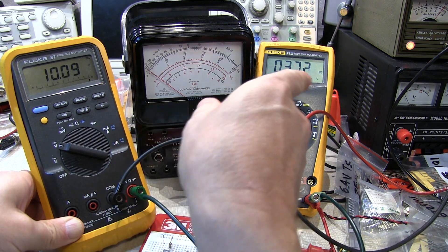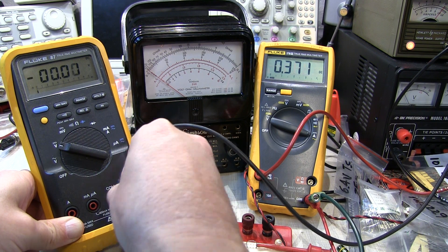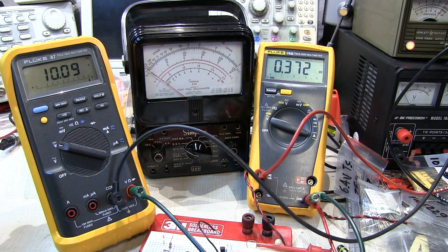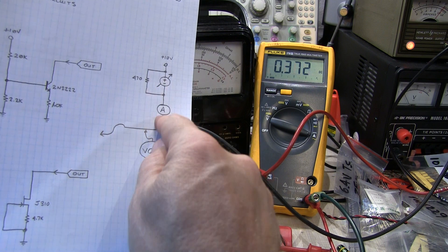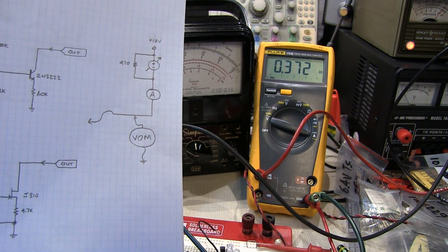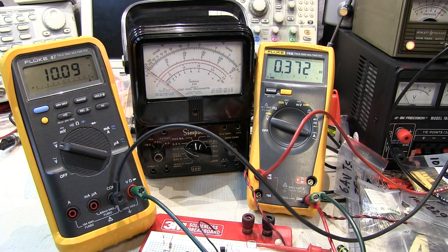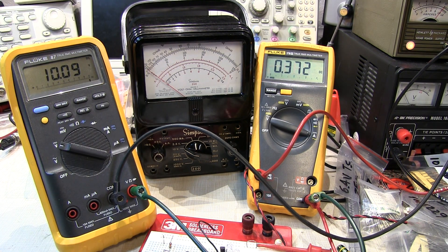Because that ammeter in our configuration here is reading not only the current going into the current source, but also current that might be flowing through the VOM. So even when you've got some really good high impedance measurement equipment, sometimes you still have to worry about it.